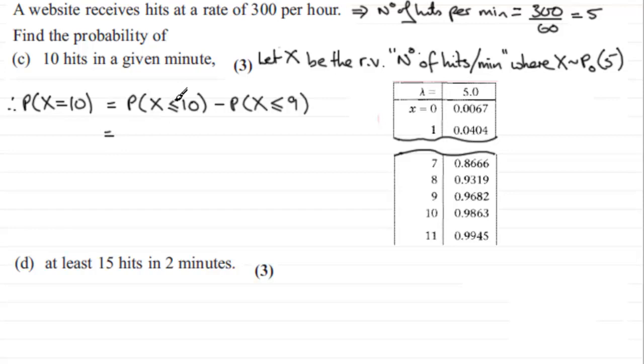And so if we just look these values up, the probability that X is less than or equal to 10 is going to be this value in the tables here, 0.9863. So we've got, we'll do it in red here, so we can color code it, 0.9863.